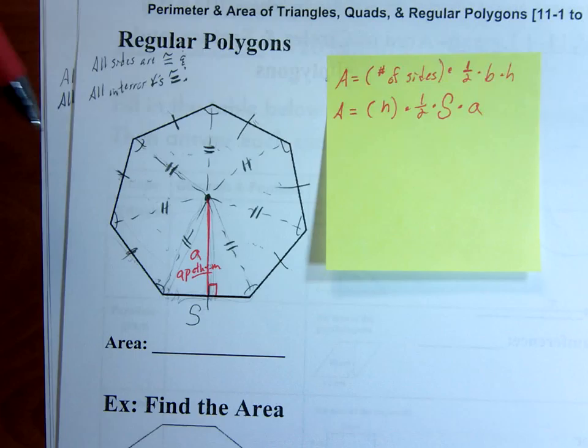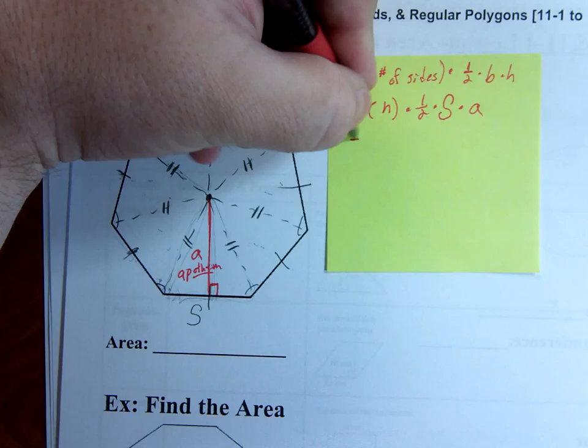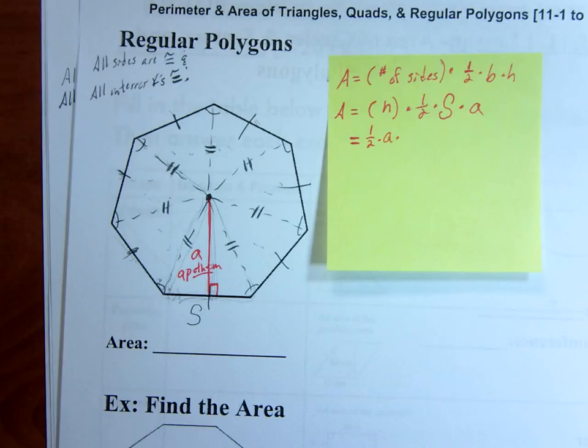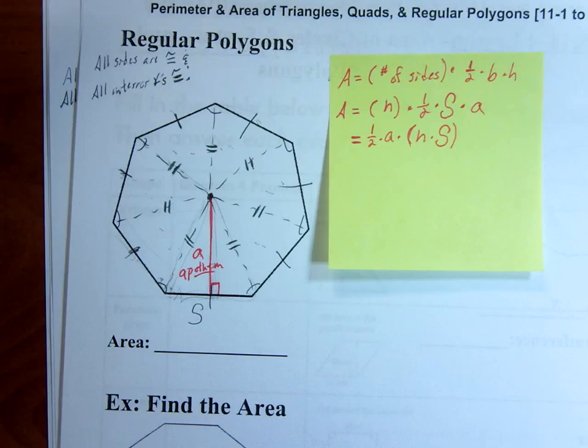Notice we're multiplying all these terms. That means that we can move them around at will, and it's going to give you the same product. 3 times 2 is the same as 2 times 3, correct? So the order doesn't matter. That's the commutative property. I'm going to move the 1 half and the apothem out front. It doesn't change the overall answer, right? It's still going to be the same. It's just organizing them a little bit more. And I'm going to group together n times s.